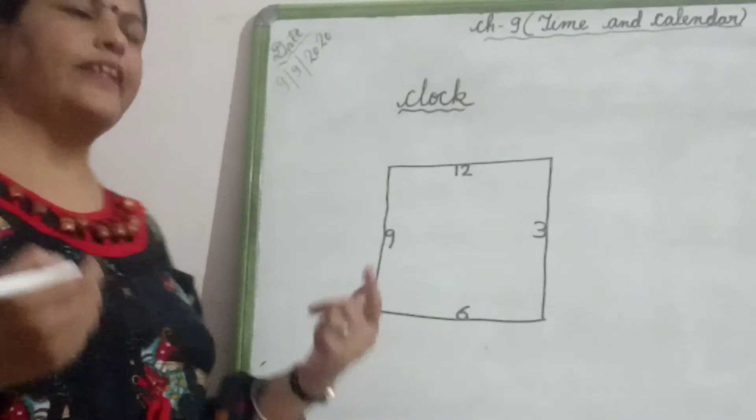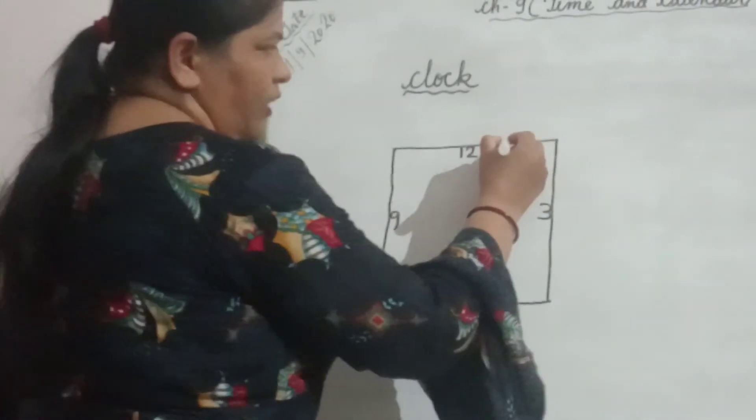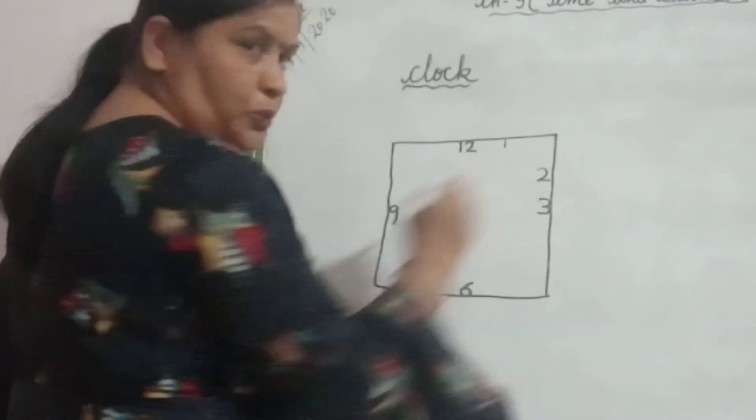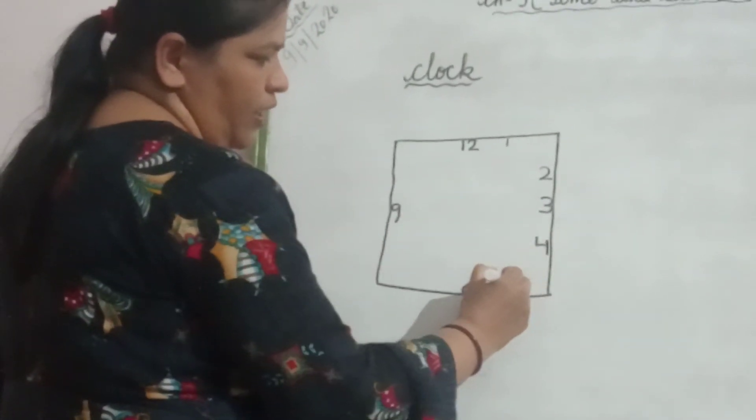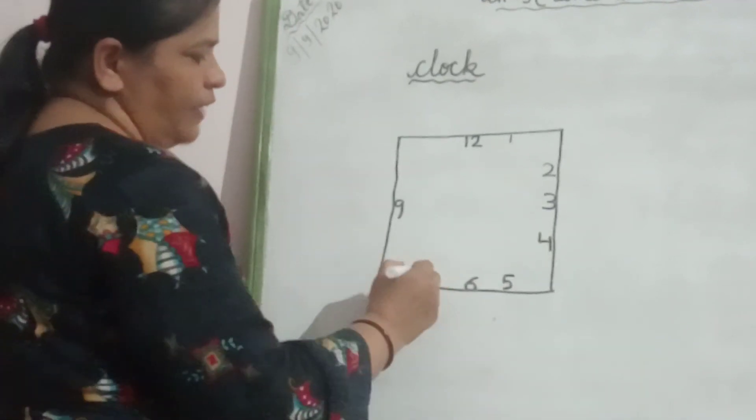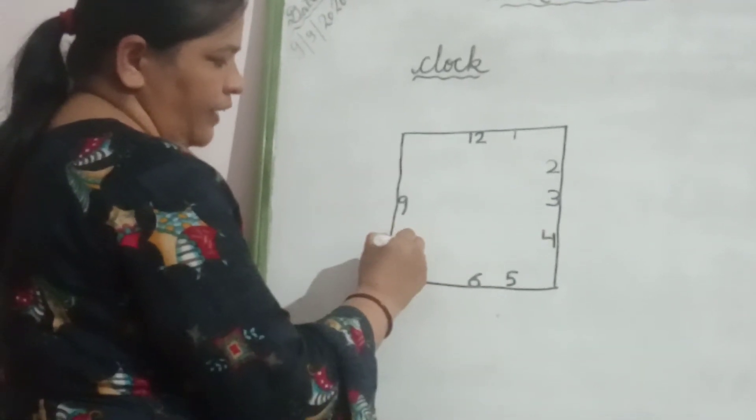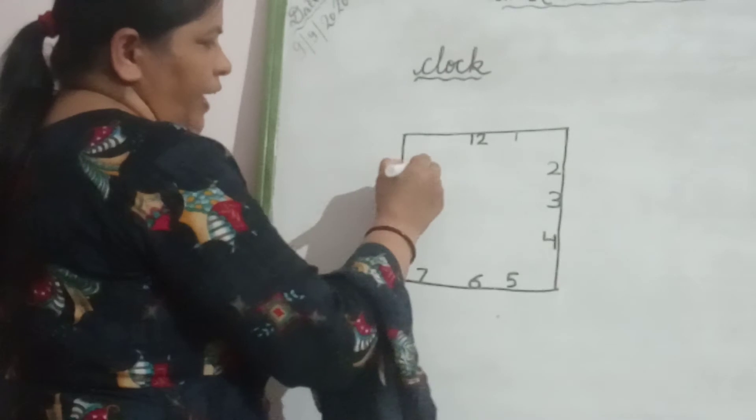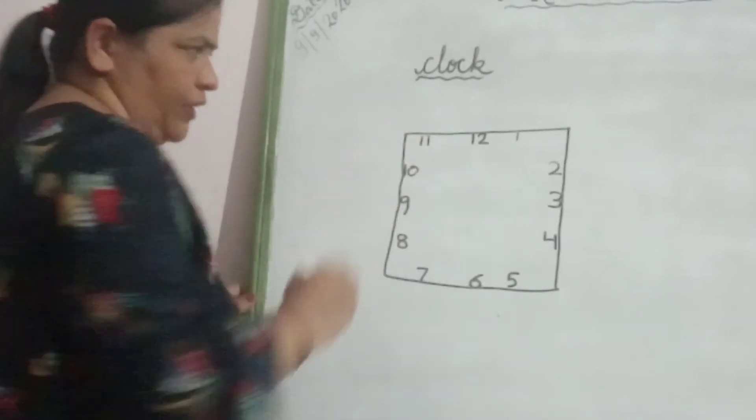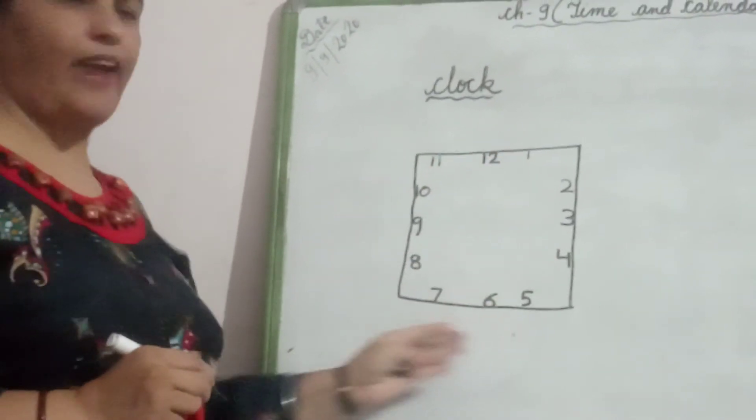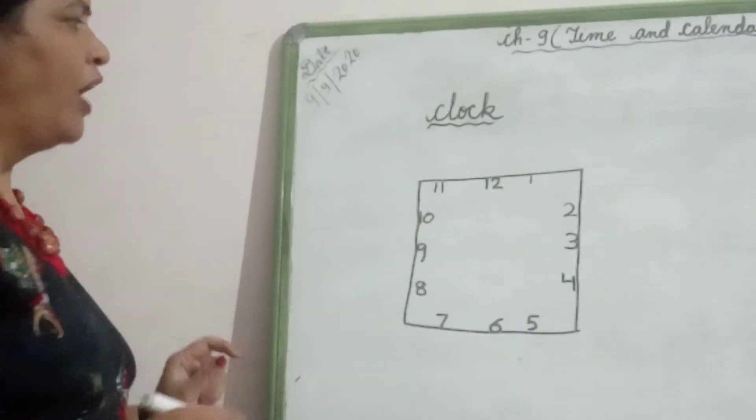After that, we will write the rest of the numbers. Like 1 and 2. Then we will write here 4 and 5. Then we will write here 7 and 8. And then we will write here 10 and 11. So, in this way, we will write the numbers from 1 to 12.